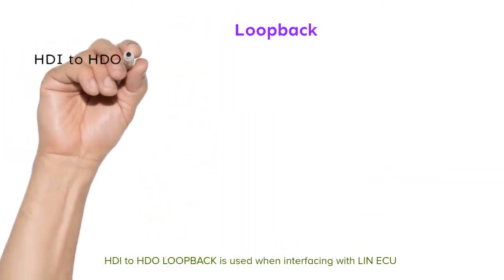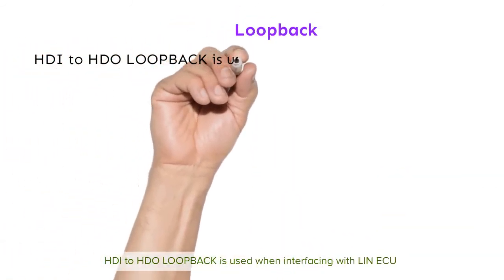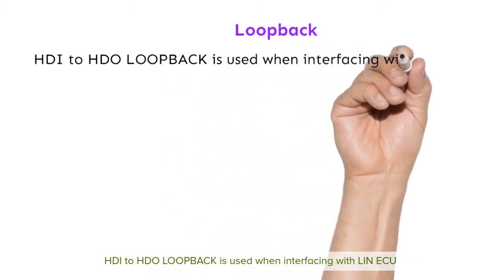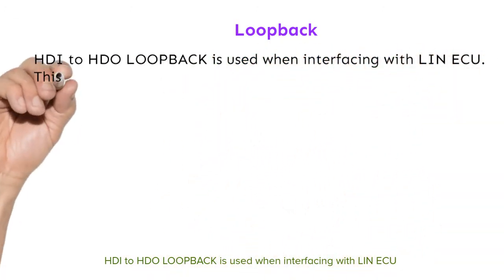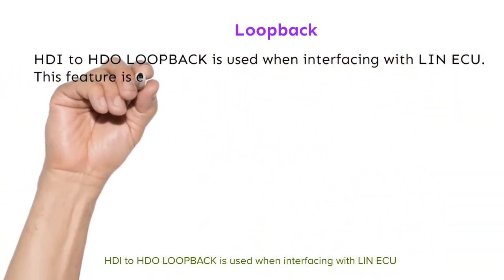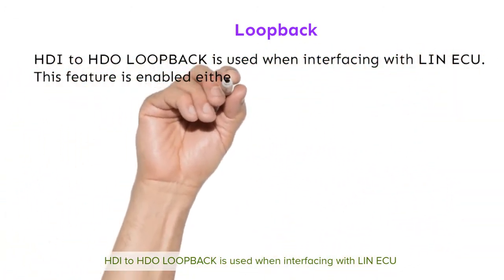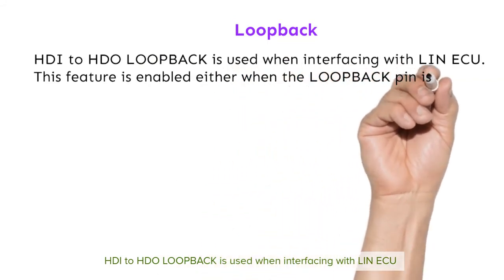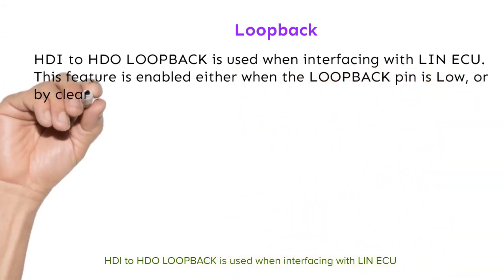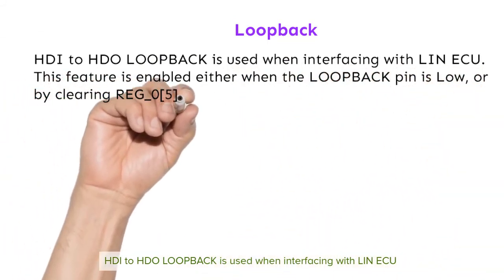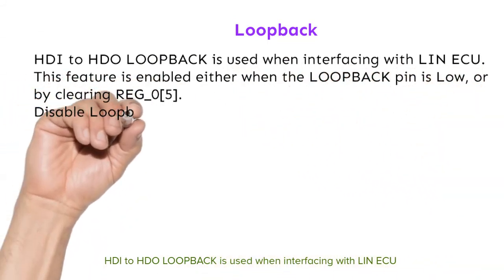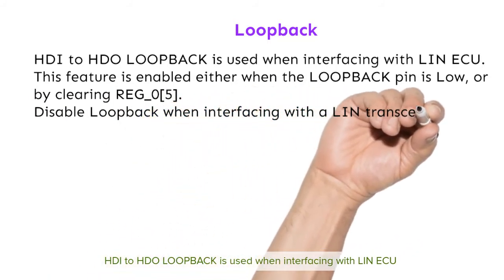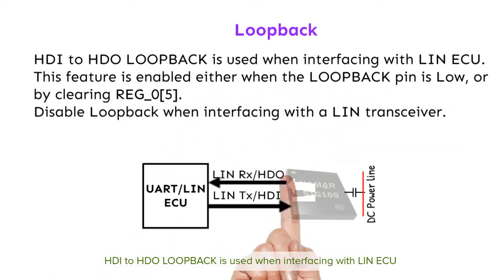Loopback: HDI to HDO loopback is used when interfacing with a LIN ECU. This feature is enabled either when the loopback pin is low or by clearing REG0 bit 5. Disable loopback when interfacing with a LIN transceiver.